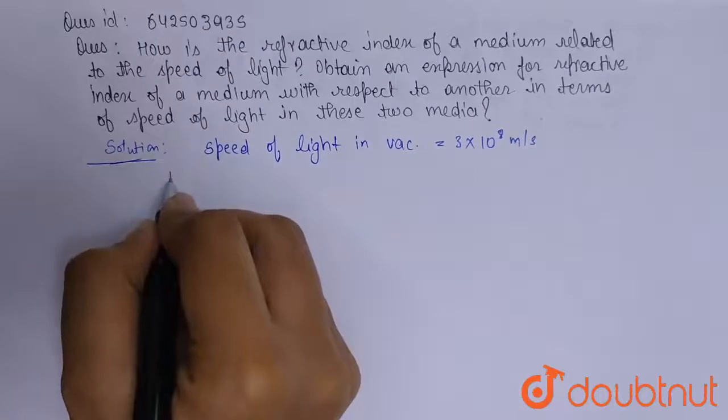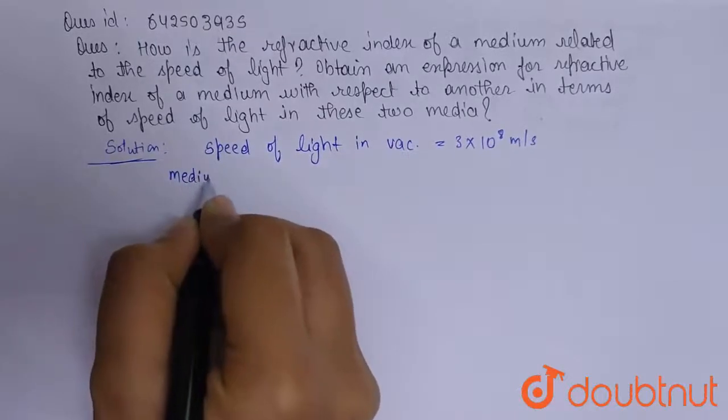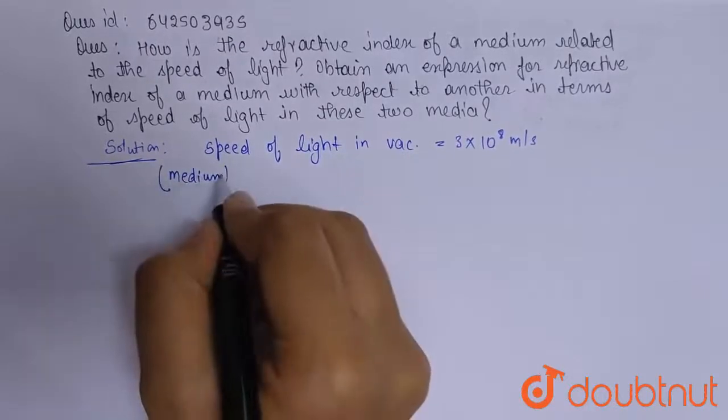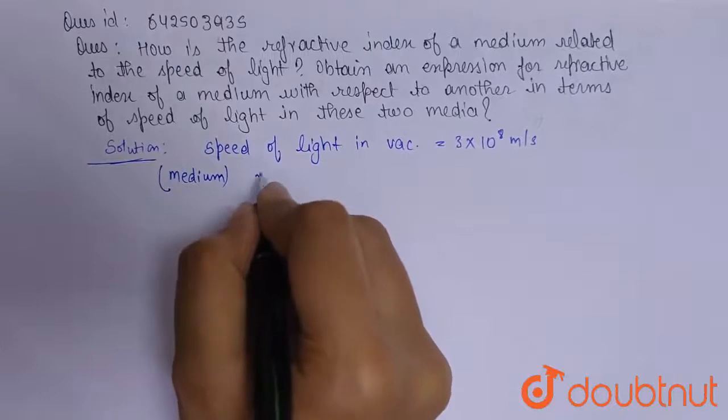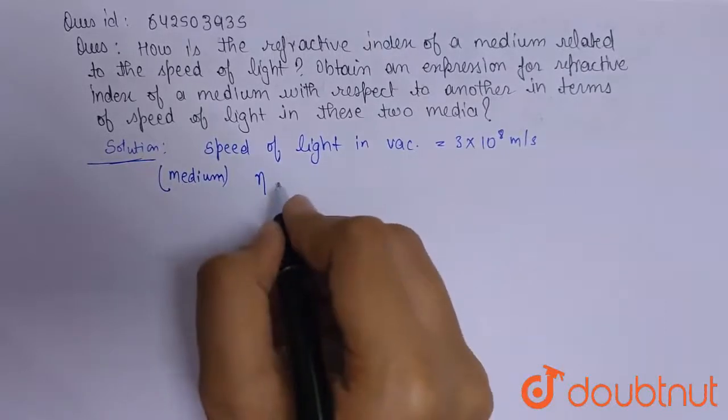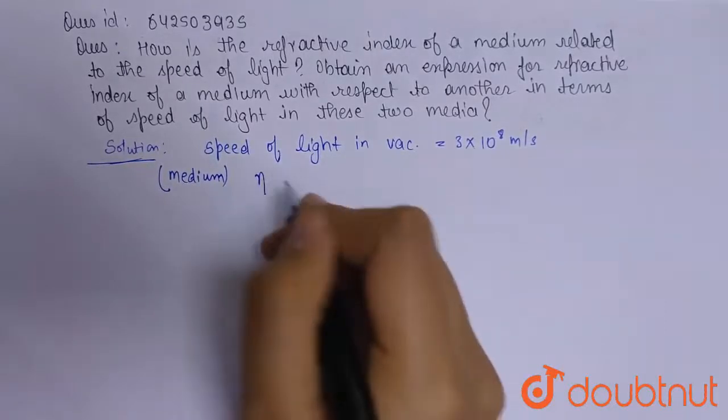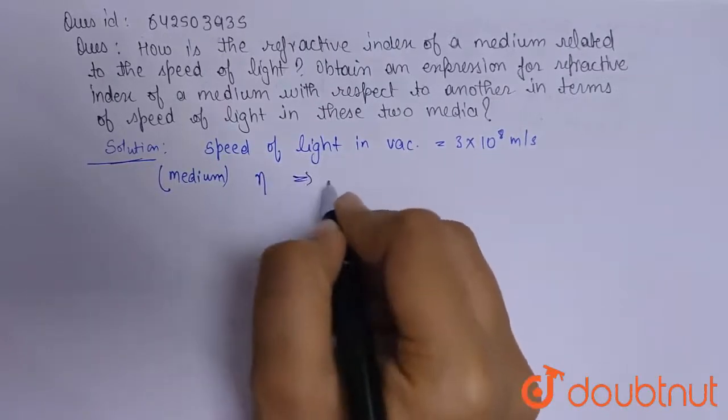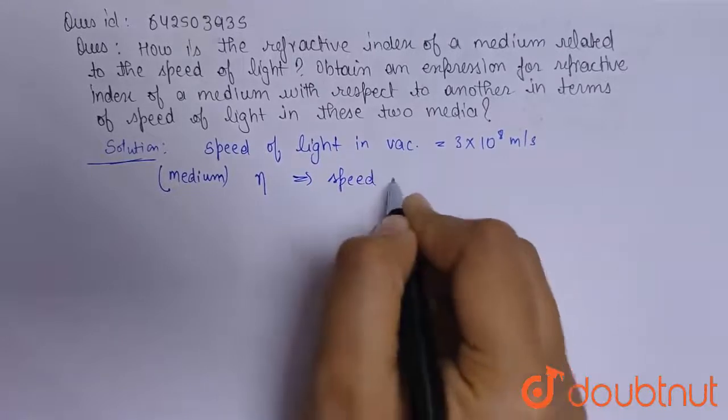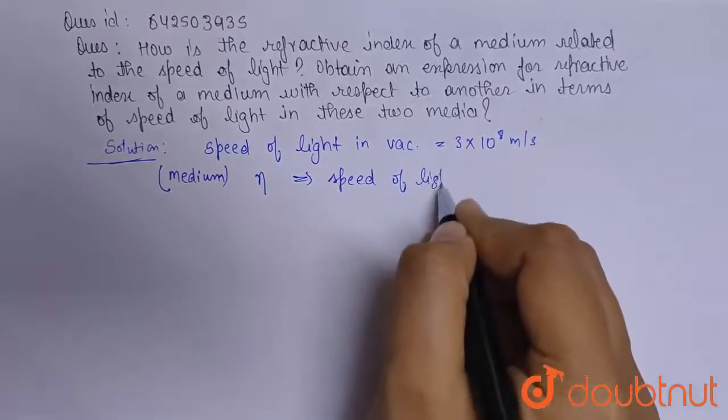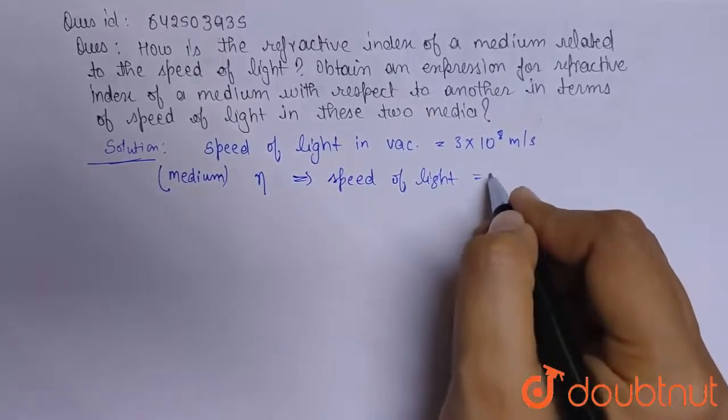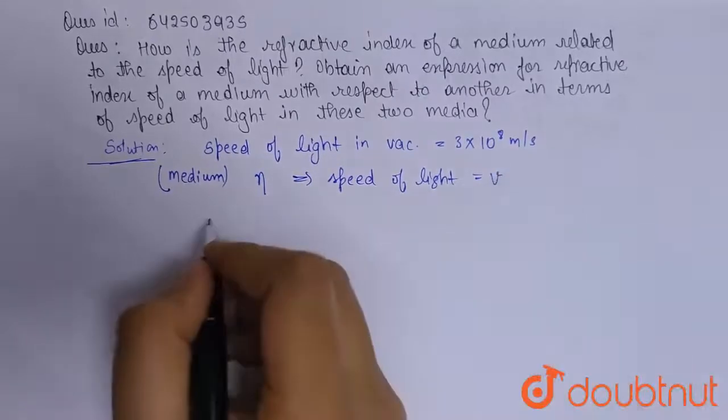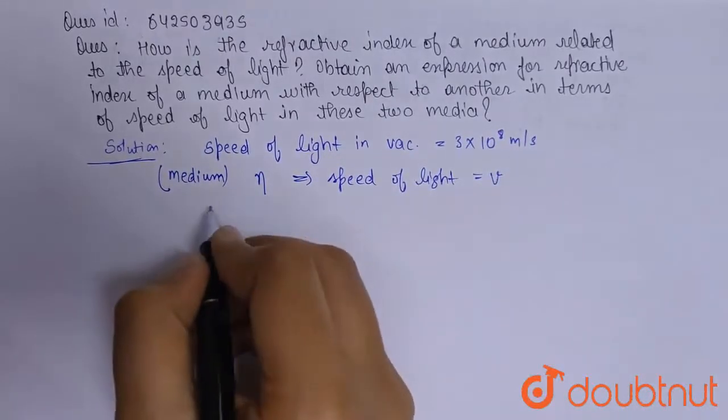let's consider a medium of refractive index n, and this medium of refractive index n has speed of light within it as v. So we define